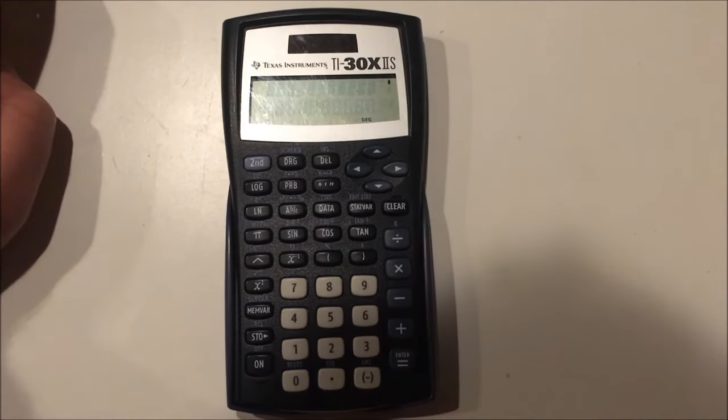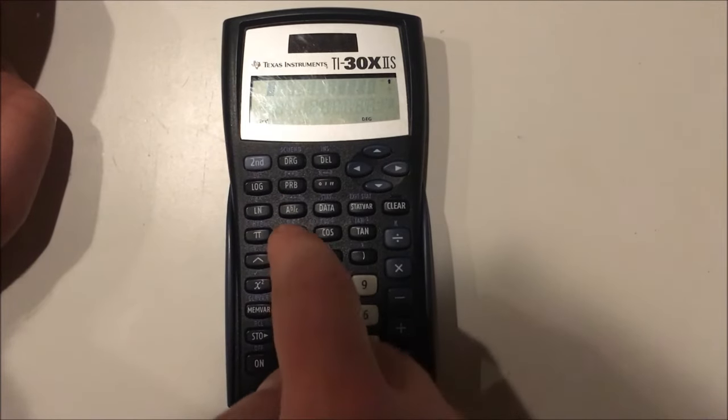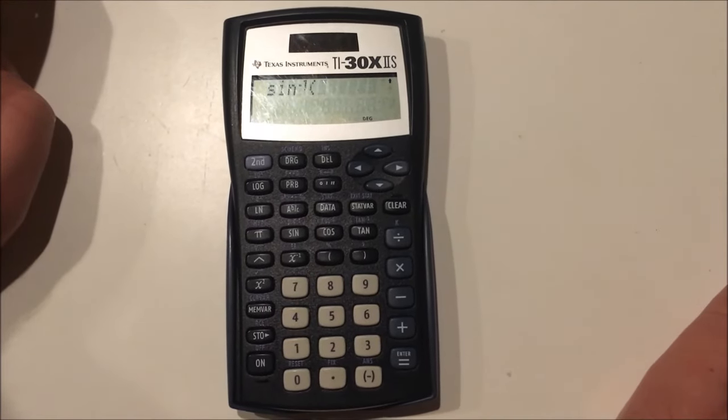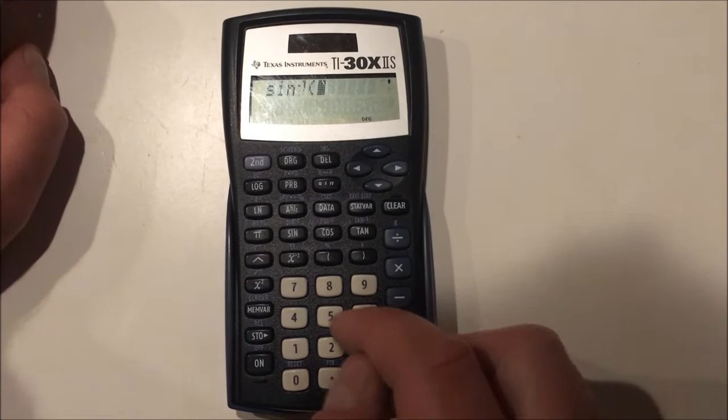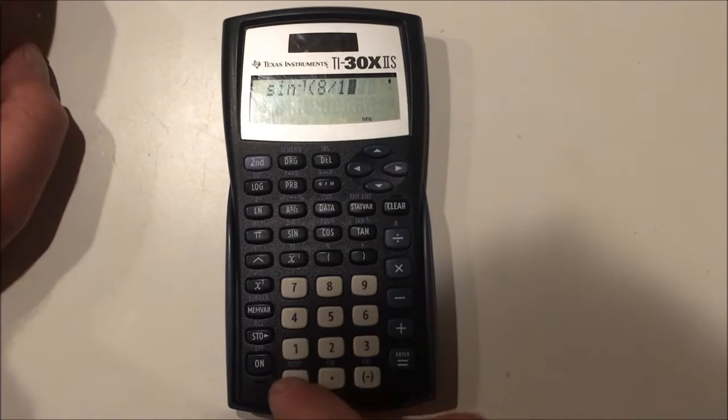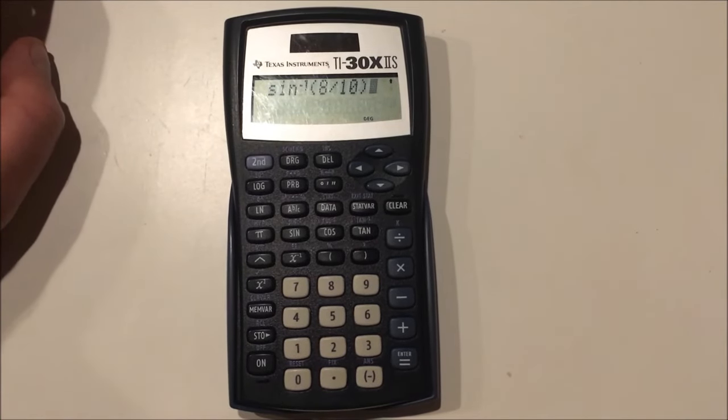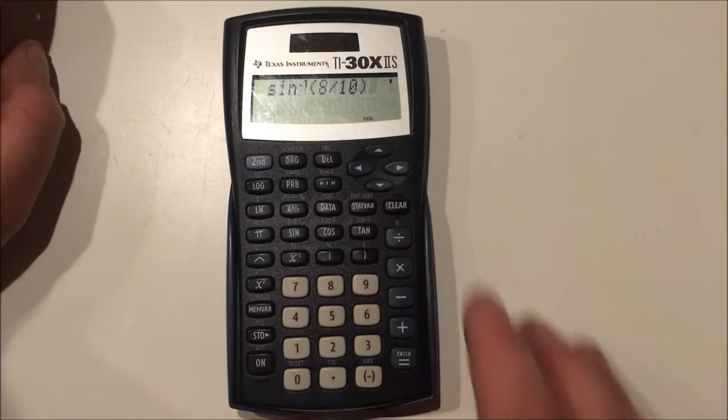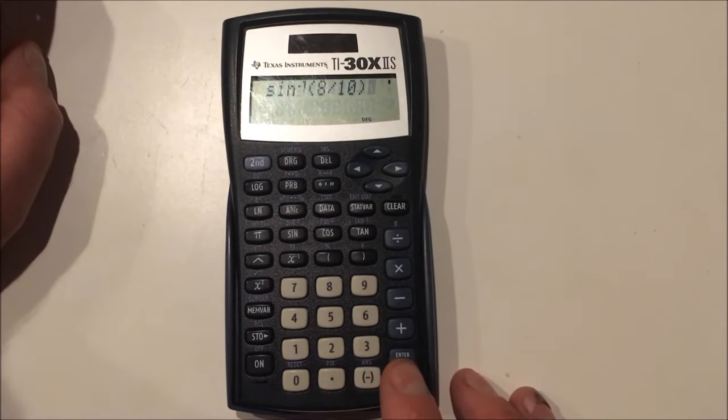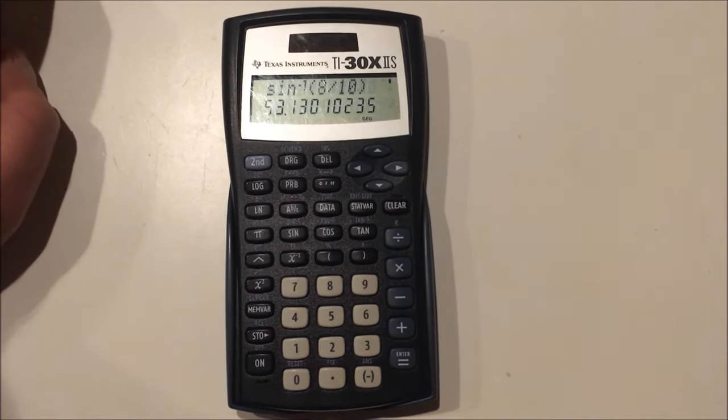Now, I can do inverse trig functions by pressing second, and then the trig button. So now I can calculate the inverse sine of something. How about 8 over 10? Remember, for inverse trig functions, we are plugging in ratios of sides and getting angles out. So when I'm in degree mode, it will give me the angle that should be the inverse sine of this value in degrees, which is 53 degrees.